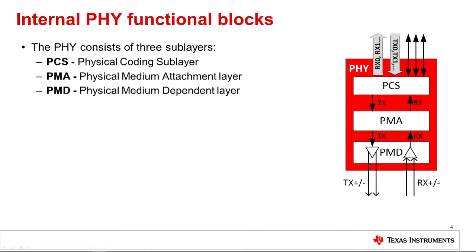The IEEE 802.3 standard defines three major functional blocks, or sublayers, that make up the PHY. These layers are the physical coding sublayer, or PCS. The primary function of the PCS is to encode and decode data. For example, in 100BaseTX, 4 bits of data received from the MAC interface to be transmitted over the network are encoded to a 5-bit block code. Hence, the actual data rate transmitted over the channel becomes 125 Mbps. The use of block codes helps with clock recovery at the receiver and provides additional codes used for link management.